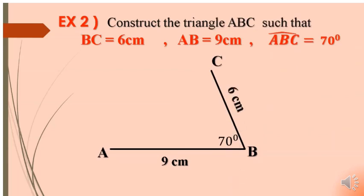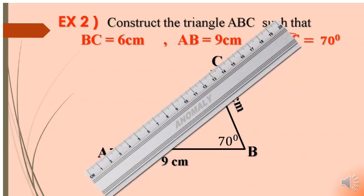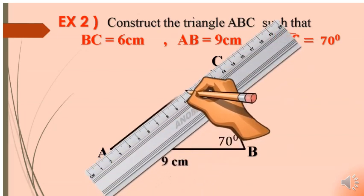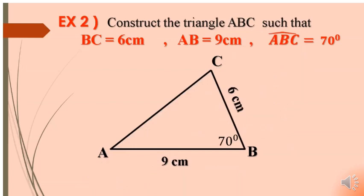Don't forget to mark the measure of angle and the length of side BC. The last step, we join A and C and here it's triangle ABC.